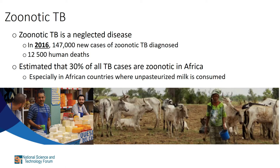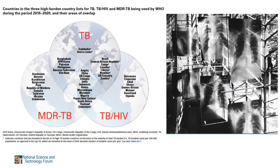It has been suggested that Mycobacterium bovis infection may account for as much as 30 percent of all TB cases in Africa, especially in countries where unpasteurized milk is consumed, and it is usually misdiagnosed as infection with Mycobacterium tuberculosis. It is not possible to clinically differentiate between infections caused by M. tuberculosis and M. bovis. Zoonotic TB can also involve the lungs but often affects extrapulmonary sites including lymph nodes and other organs.